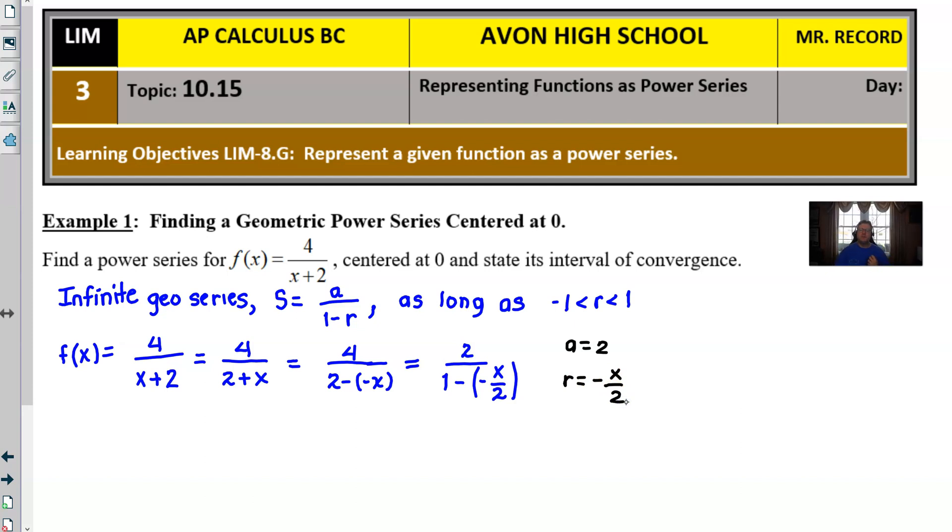You have the form. It says that your value of a would be 2, and the value of r would be this negative x over 2. And once you know those two things, you can start to do a lot of cool things. Like you could write the open form of the series. Well, what do I mean by that?